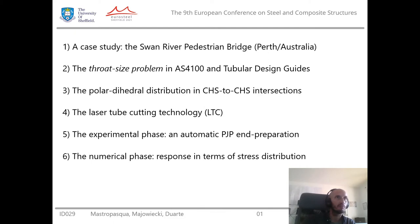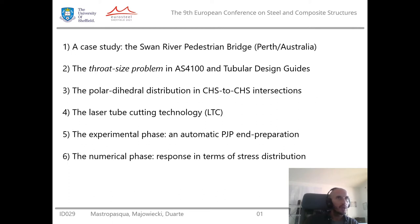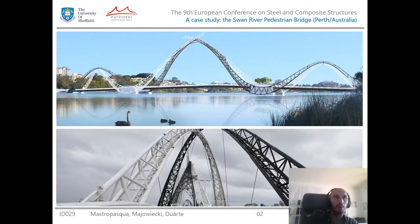The presentation is split over six points. Firstly, we look at the interesting case study which is the Swan River pedestrian bridge in Australia. Second, we move to the throat size problem in the Australian standard AS4100 and the associated tubular design guide. Then we look at the polar and throat distribution in the tubular intersection, especially for circular tubes, moving to the laser tube cutting technology, and finally converge to the experimental phase described here and the associated numerical analysis developed to investigate the stress distribution in the throat plane.